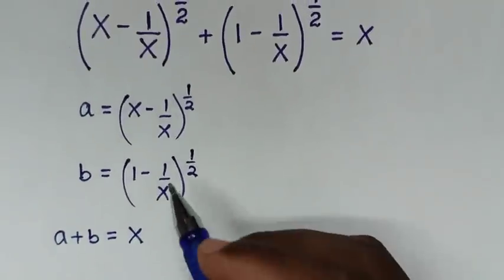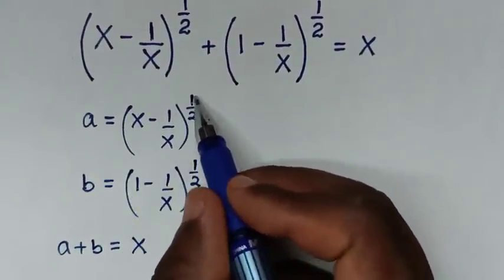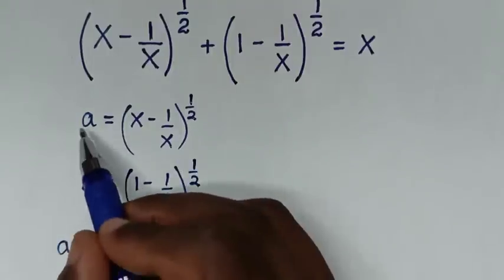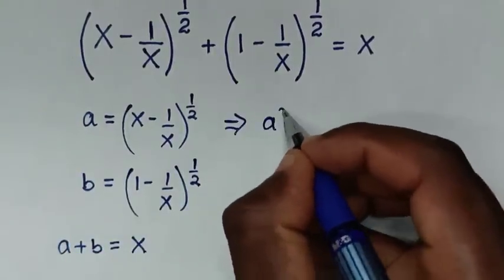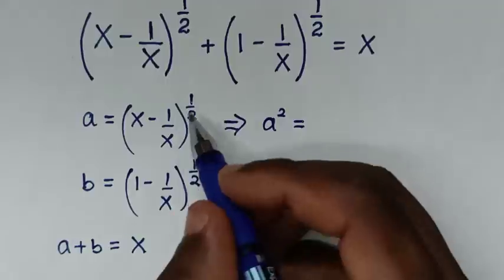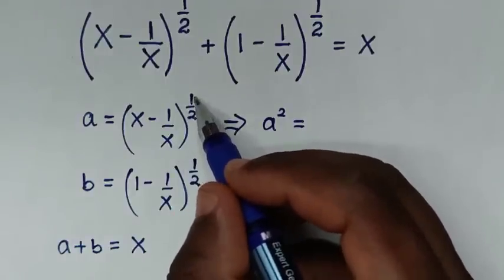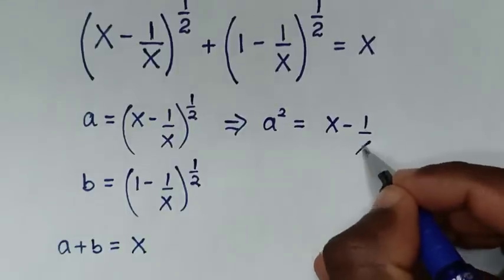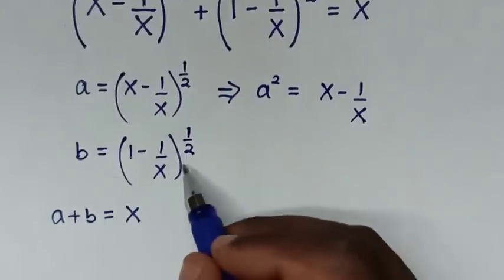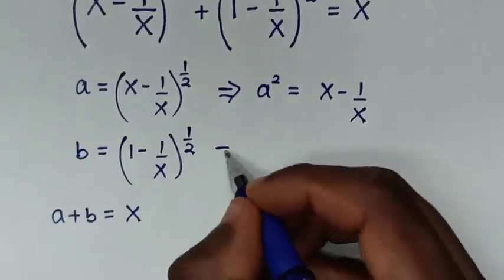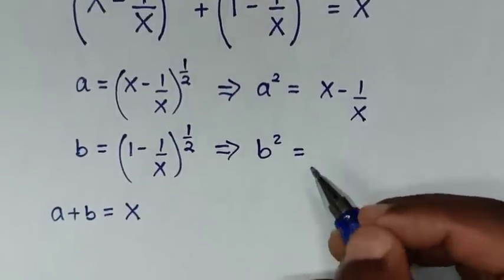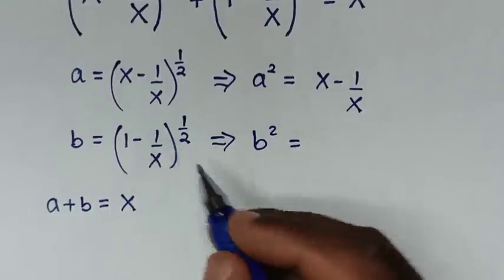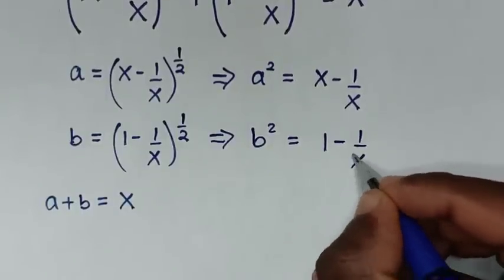In the next step, to remove the power of a half from both terms, we will square both sides. So a squared is equal to x minus 1 over x, since the square cancels with the power of a half. Similarly, b squared is equal to 1 minus 1 over x.